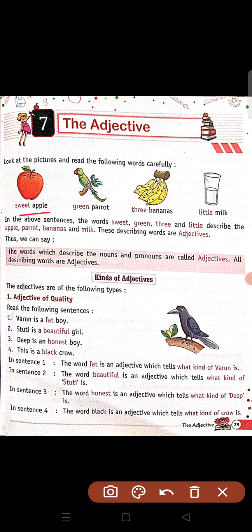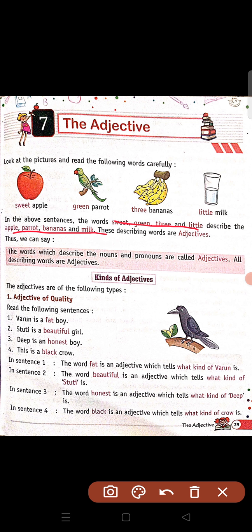Sweet apple, green parrot, three bananas, little milk. So in the above sentences, the words sweet, green, three and little describe the apple, parrot, bananas and milk. These describing words are adjectives.